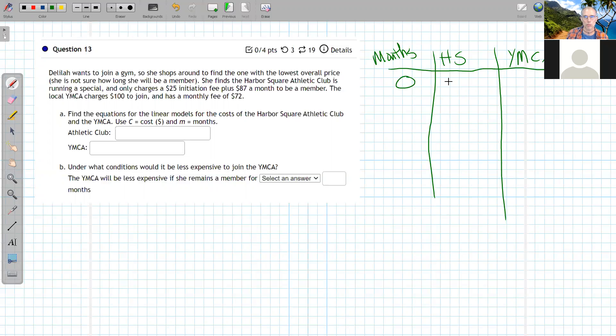Initially at zero months, Harbor Square is only $25 but YMCA is $100. Then one month later, looking at total cost, it would be $87 plus $25, which is $112 for Harbor Square.